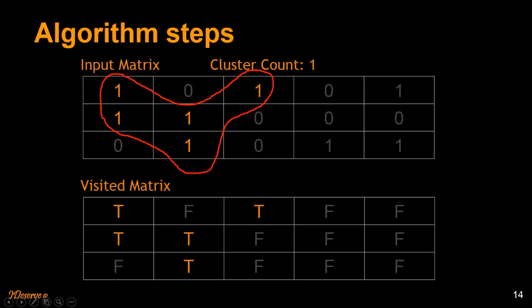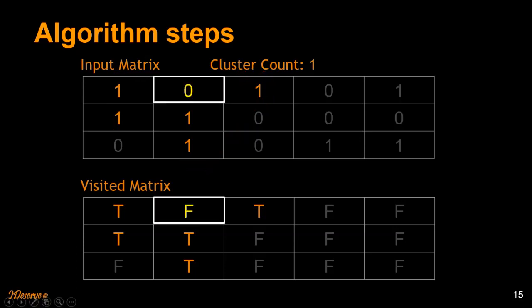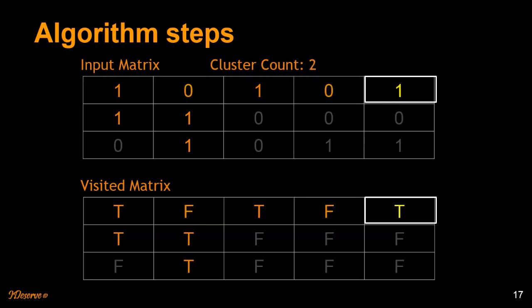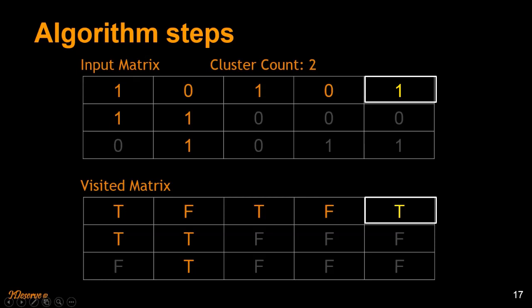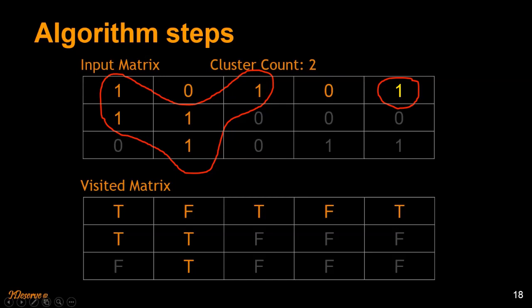We move ahead to the next element in the matrix which hasn't been visited. This one hasn't been visited but doesn't have value 1, so it's not a node in the graph. We go ahead to an element which is 1 and hasn't been visited, and increment the cluster count to 2. This particular element doesn't have any connected nodes — the adjacent nodes have value 0. So even if we call DFS it returns without marking any other adjacent vertices as visited. This is a cluster with only one node — another connected component found.